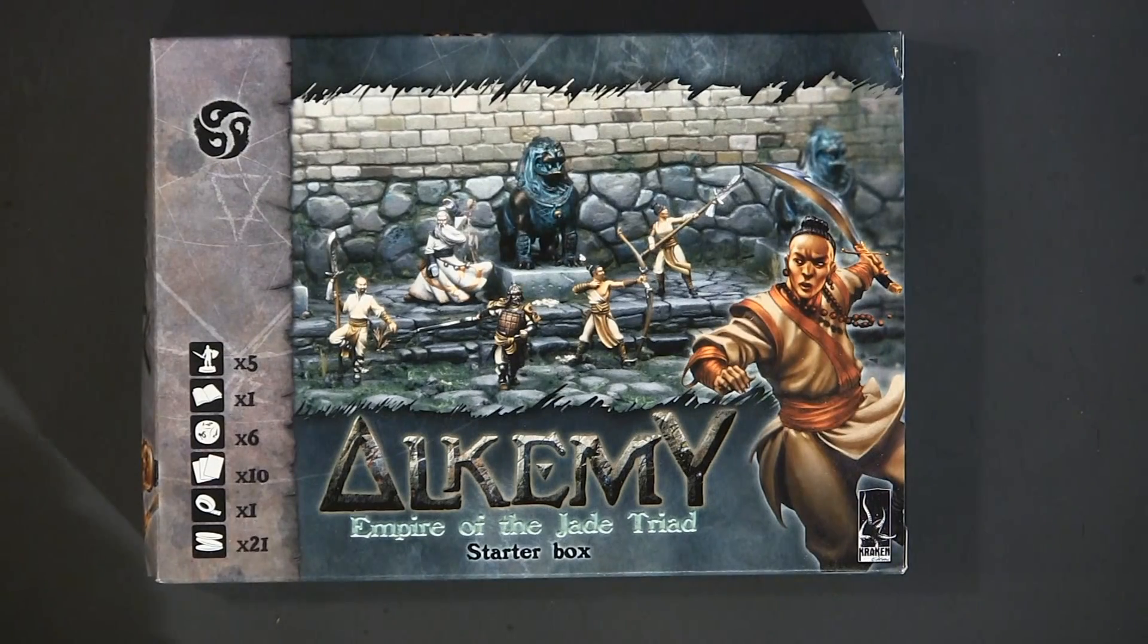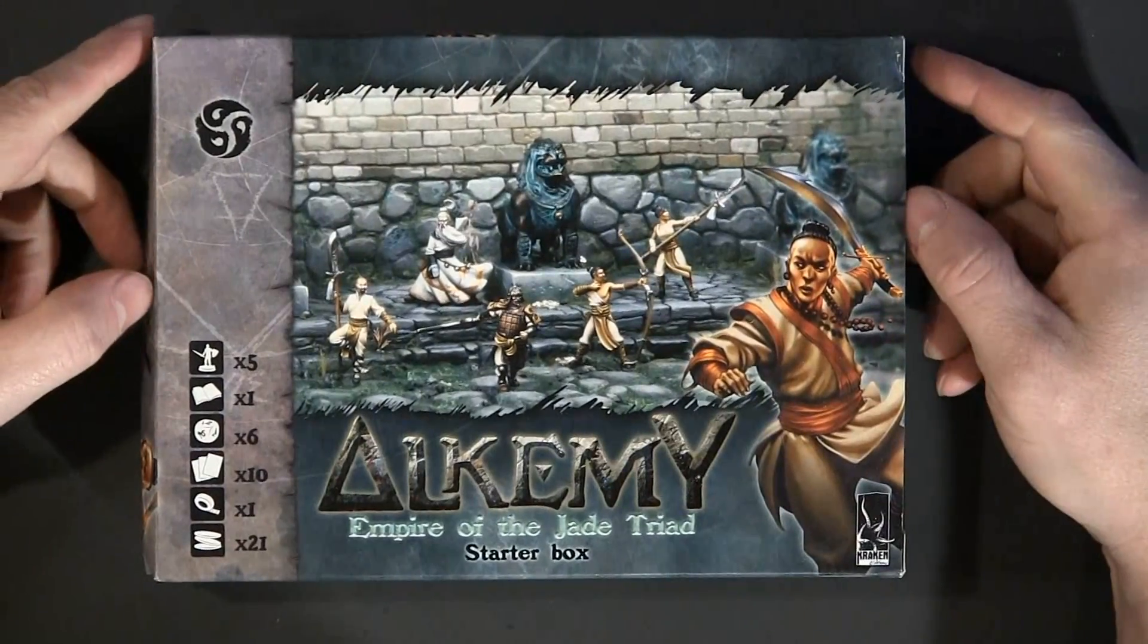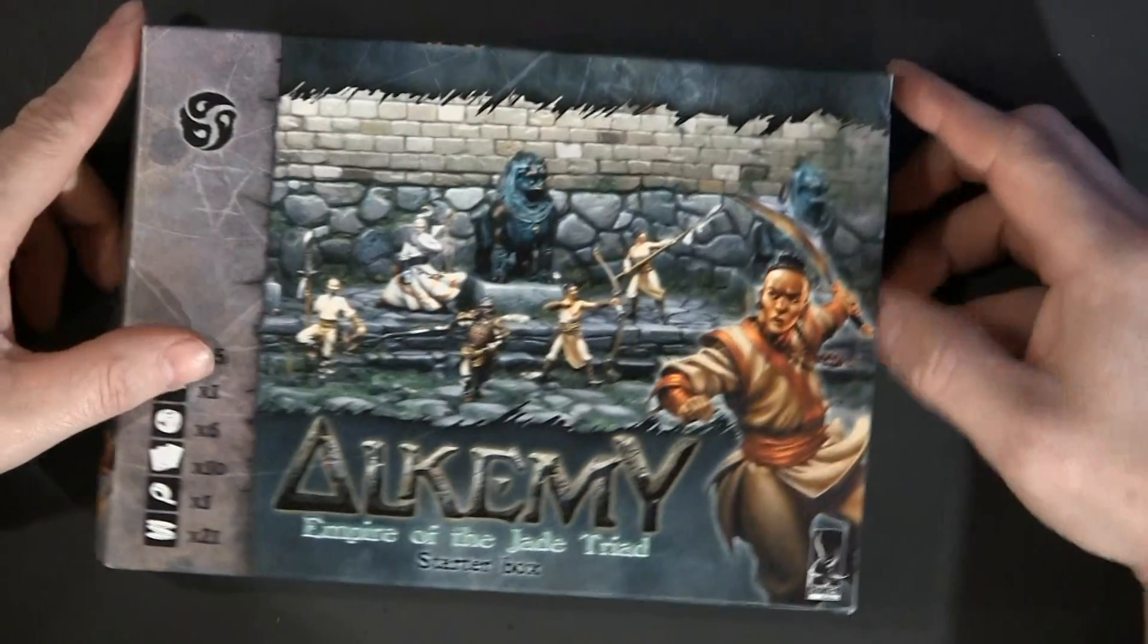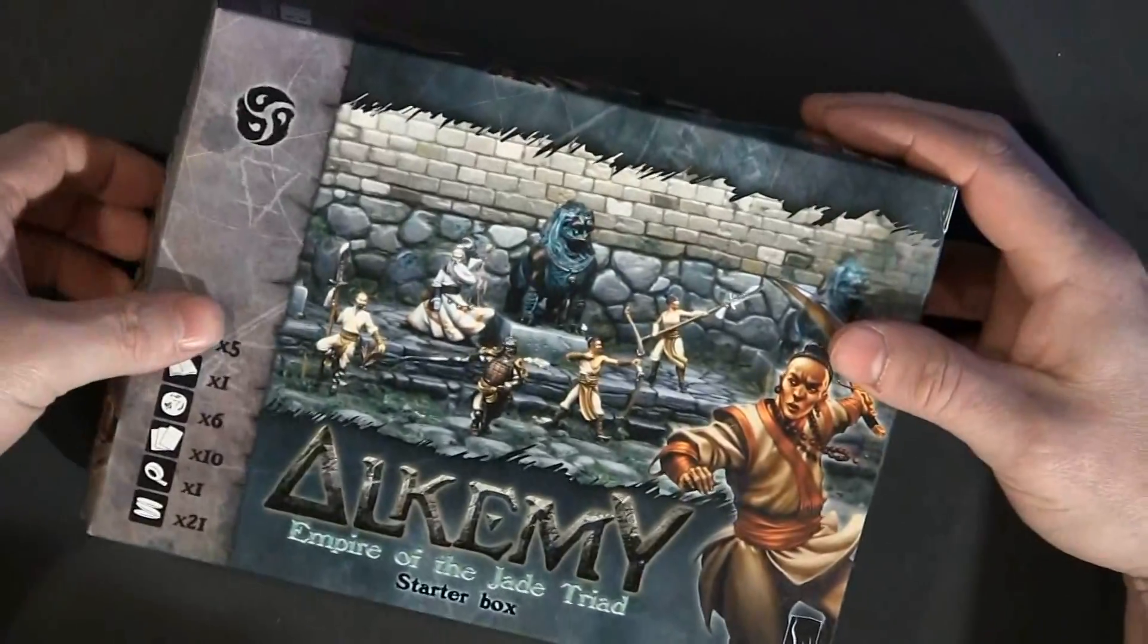Hello Gamers, Matt Lumpke here with Hugh Gamer Doggles in another box breaking. In this box breaking we have the Empire of the Jade Triad for the Alchemy game. Alchemy is a tabletop miniatures game, skirmish style game. It's a good box.